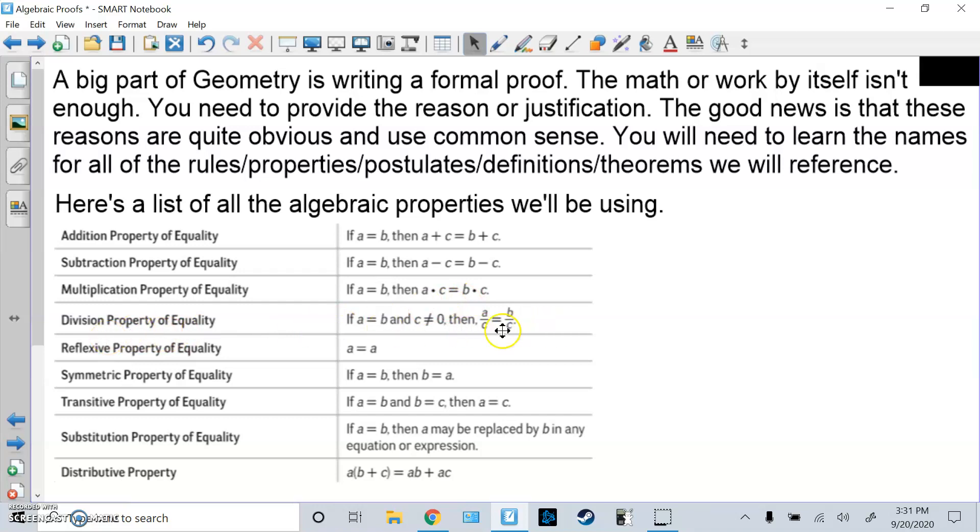Division PoE is when you divide both things by the same number. Reflexive is if both sides match. Symmetric is when you switch the side. So if A equals B, you can change it to B equals A, which we do use a lot. Transitive is if you have A equals B and B equals C, then you can say A equals C. That's pretty much the law of syllogism. Substitution, you can replace or plug in something or simplify, combine terms.